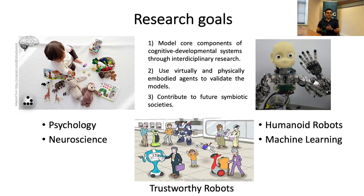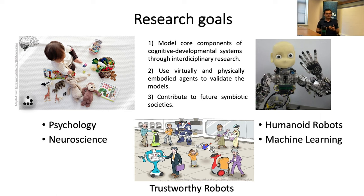To conduct research in this direction, first I need to set my goals. Here are three steps of my goals. First, I am collaborating with psychologists and neuroscientists to extract core components of intelligent social interactions inspired from cognitive developmental systems, and validate these models by using either physically or virtually embodied agents — oftentimes humanoid robots. My last goal is to contribute to the future of symbiotic societies by making these robots more trustworthy for their interactions in society.